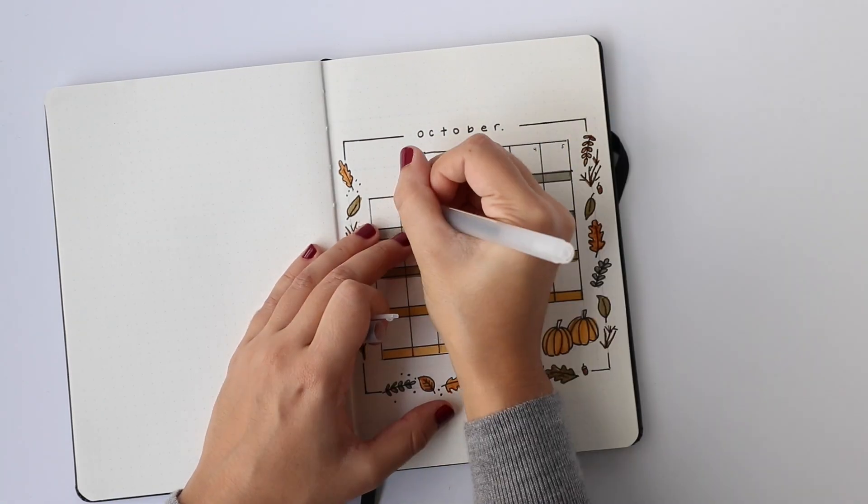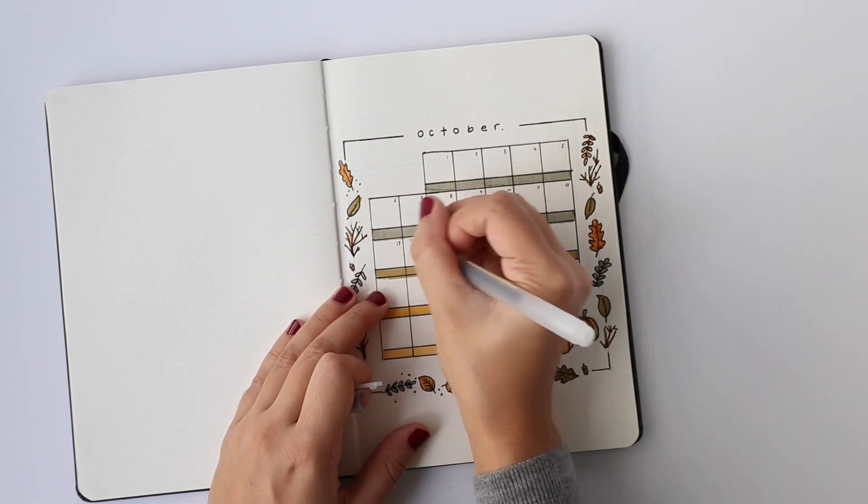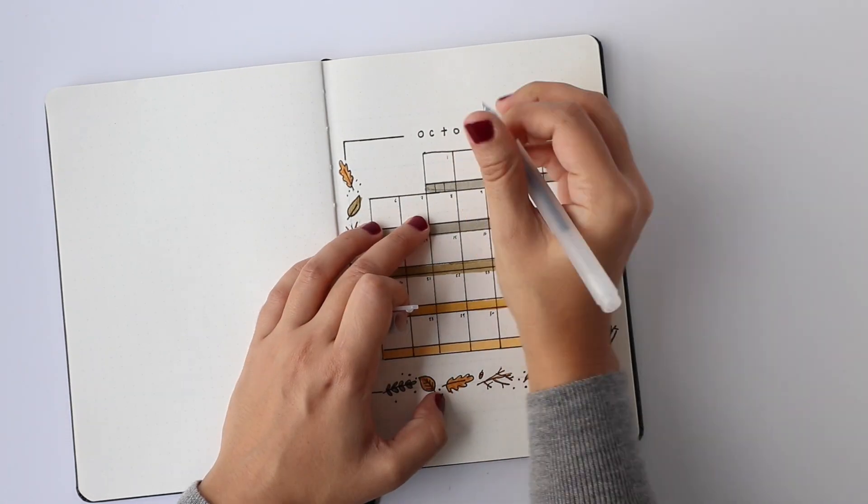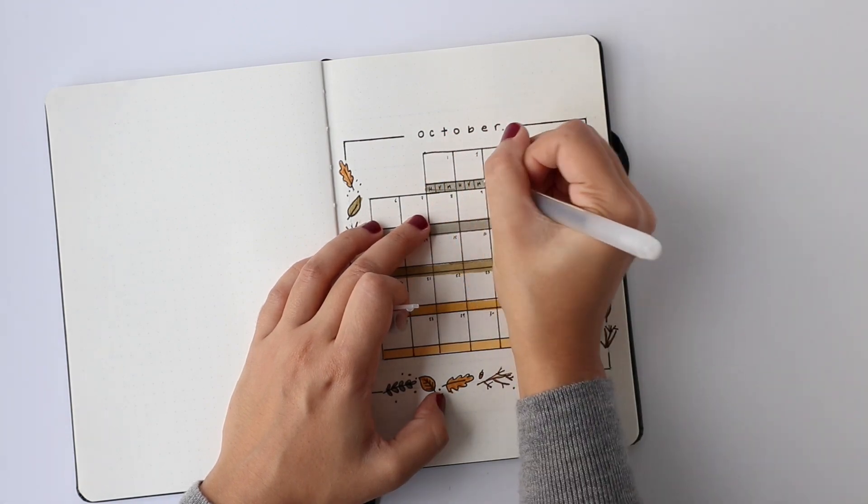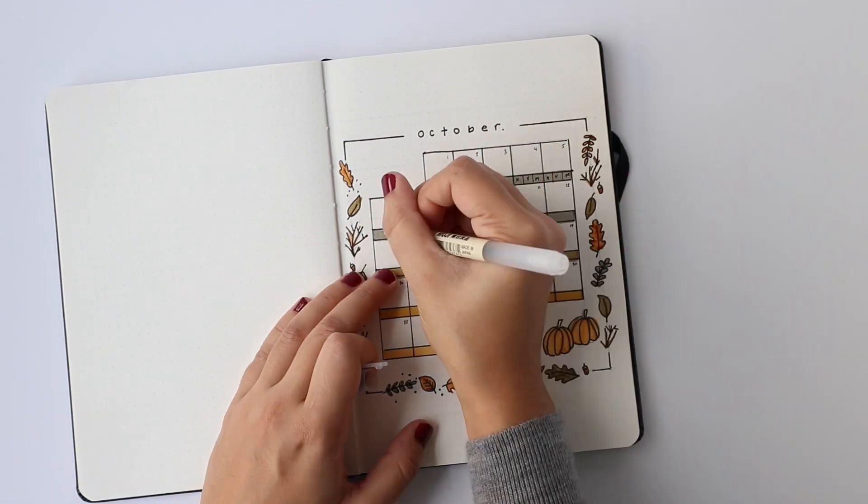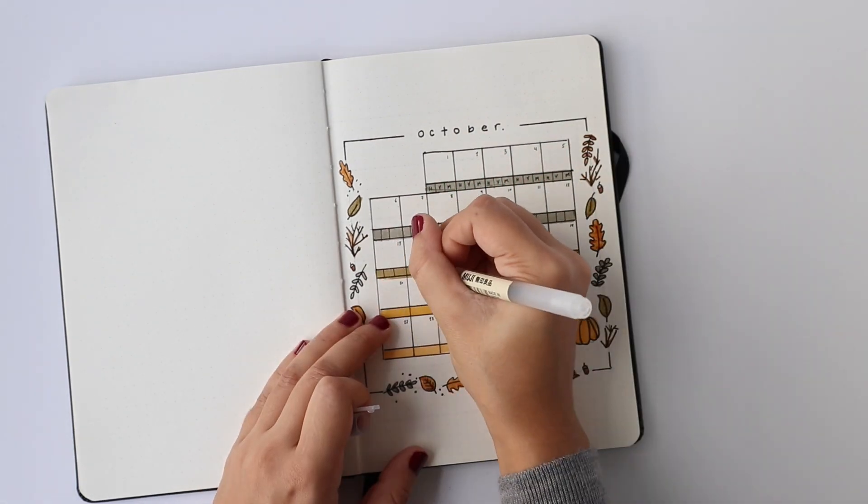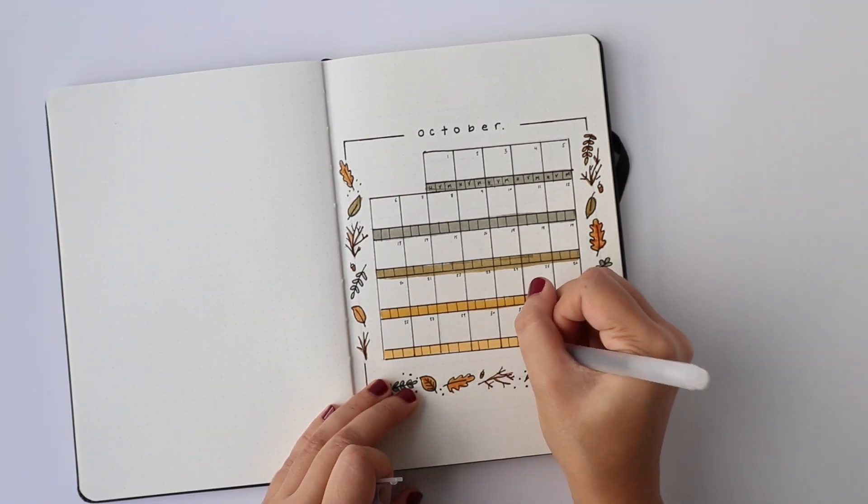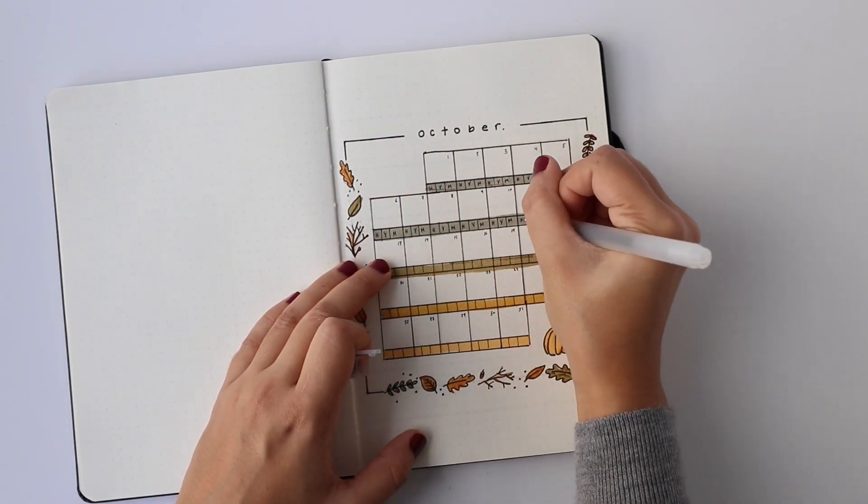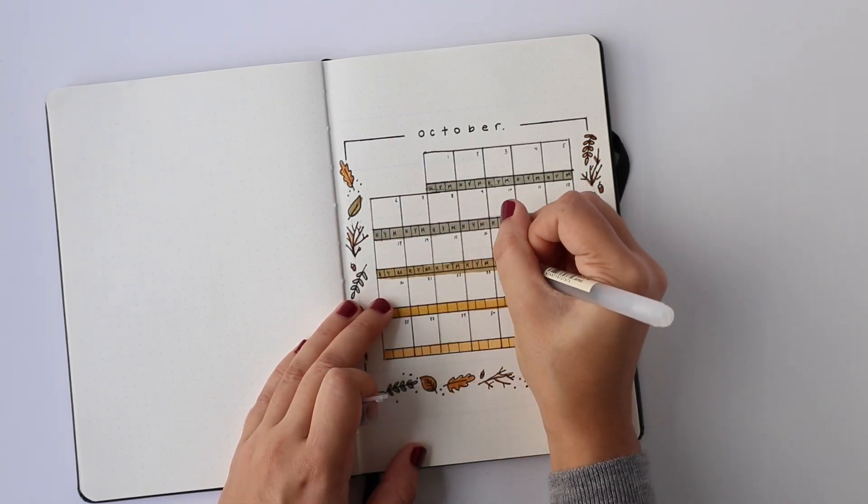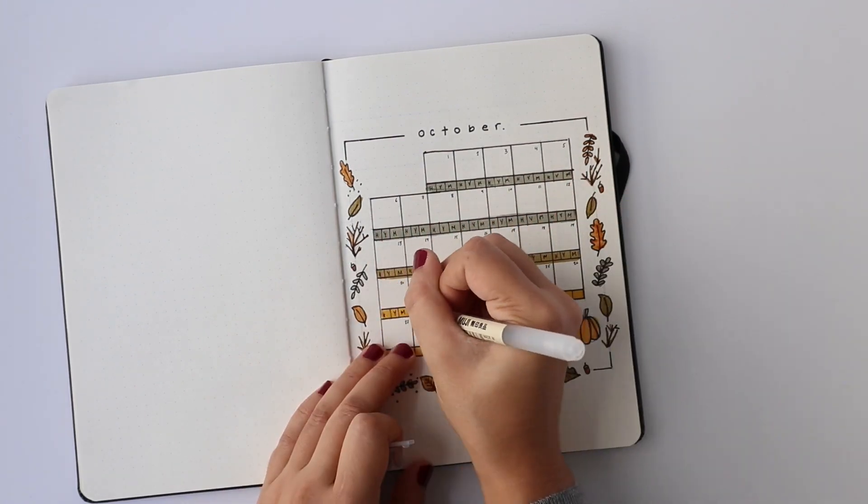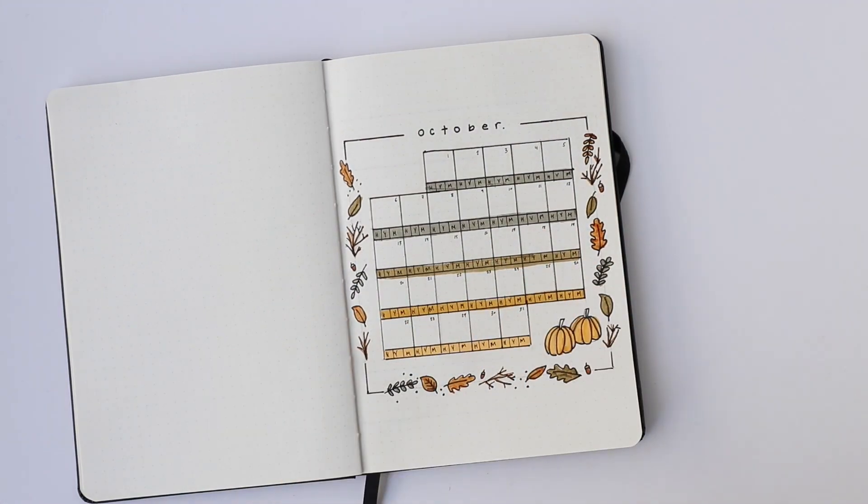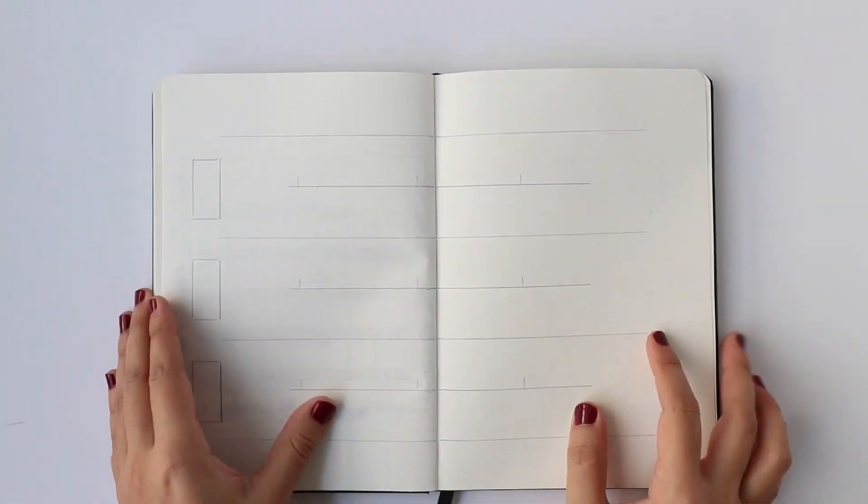Even though this spread ended up having a lot more doodles than I'm used to incorporating into my spread, I really did like how this turned out. It's fall without being overly cluttered. It's still clean looking, at least in my opinion, and I just love the added touch of changing the colors of the lines of my habit tracker as well. Very happy, I think this ended up being one of my favorite spreads.